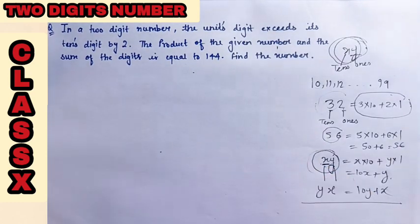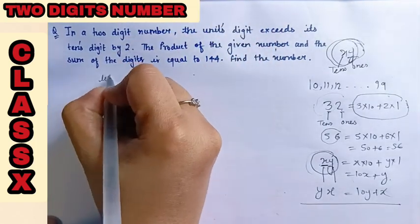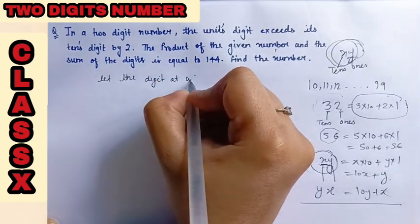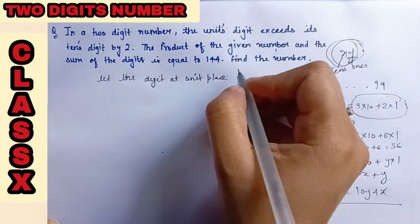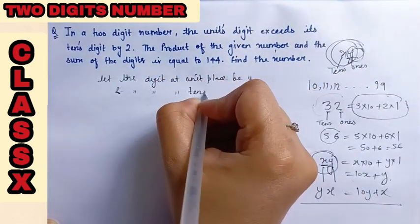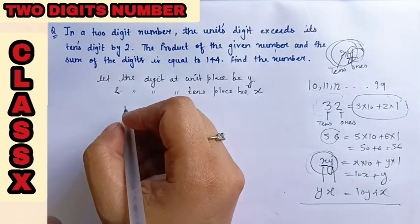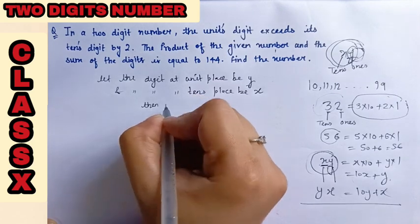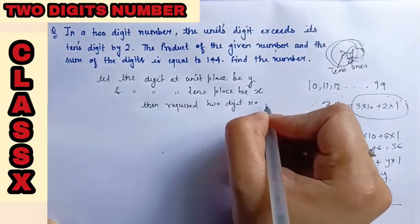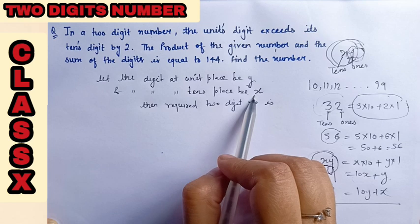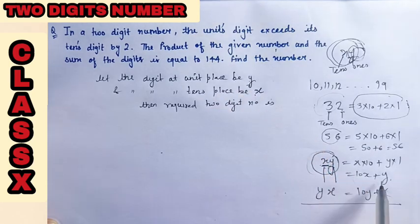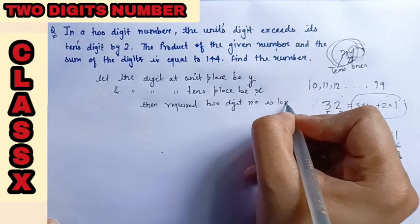First of all, we have to suppose the number. So let us suppose, let the digit at unit place be y and the digit at 10th place be x. Then the required two-digit number is, when you have 10th place by x, then x will be 10, 1's place by y, then it will be 1, and then addition of both. So the number is 10x plus y.